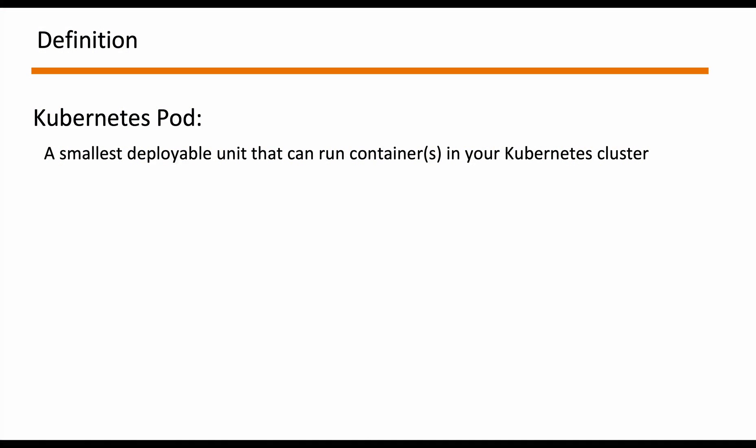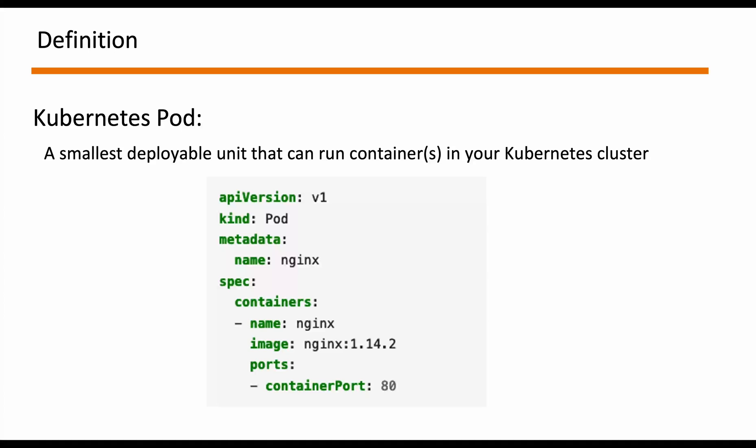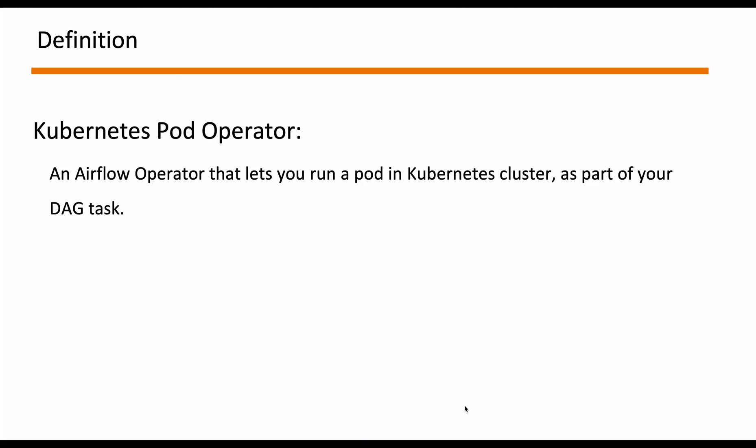A Kubernetes Pod is the smallest deployable unit in which you can run a container or multiple containers within your Kubernetes Cluster. It's defined by a YAML definition. The simplest one would list containers, each referring to an image, and you can attach configurations like port, commands, arguments, and network configurations. You can get more information from the official Kubernetes documentation. Kubernetes Pod Operator is the type of Airflow Operator that lets you run a pod in a Kubernetes Cluster as part of your DAG task — meaning if you have any Docker image, this operator lets you run that image as a separate pod in the Kubernetes Cluster.